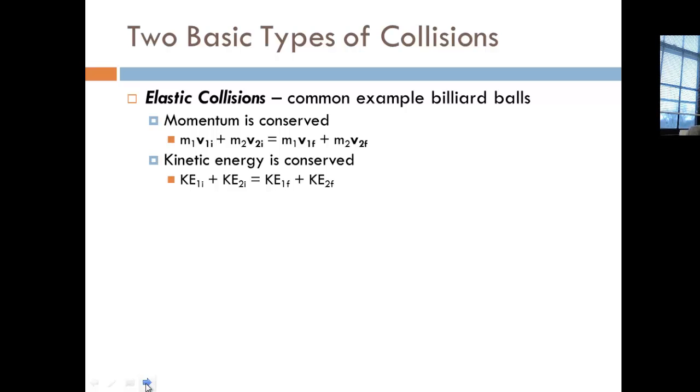Keep in mind these are vector quantities, so if the two objects are going in different directions to begin with, you do have to take that into consideration. Then you set that equal to the final momentum of your system: m₁v₁f plus m₂v₂f. At the beginning of your problem you're probably going to have to choose a positive and a negative direction, and then be consistent in applying those algebraic signs.